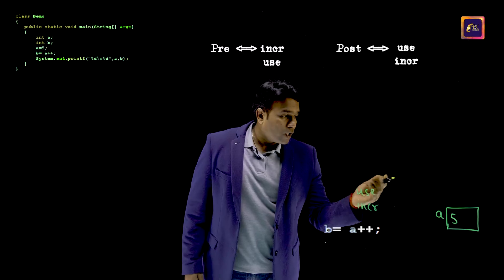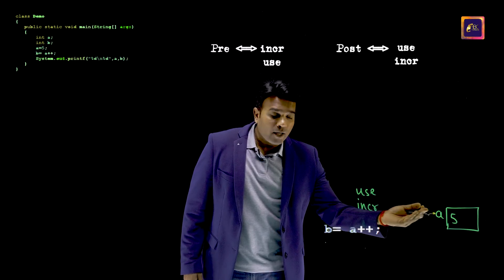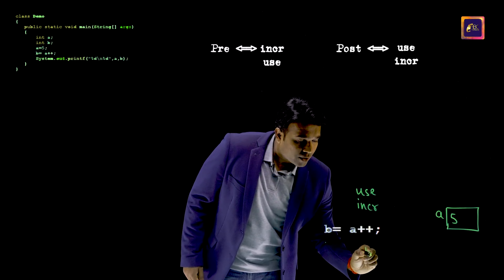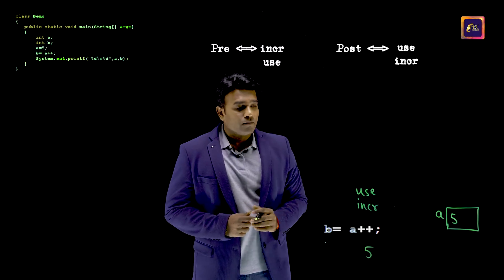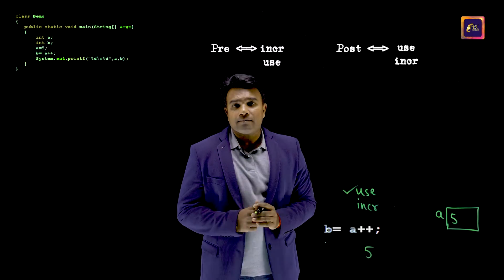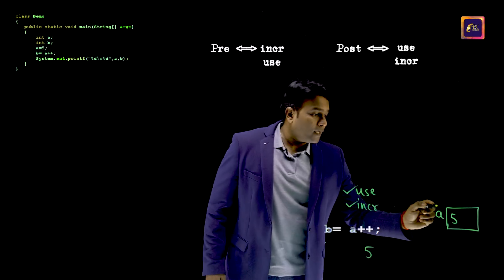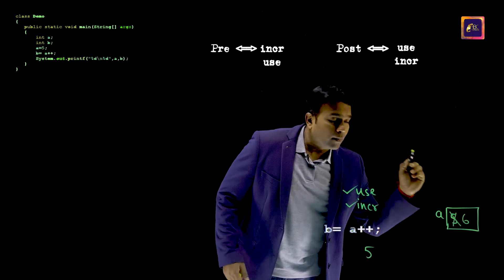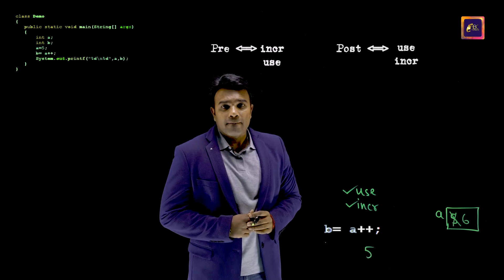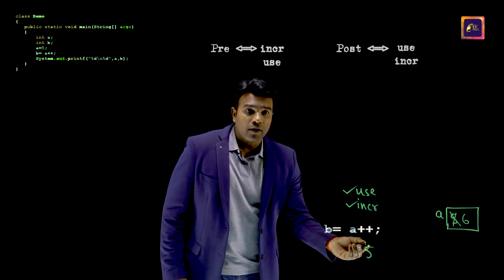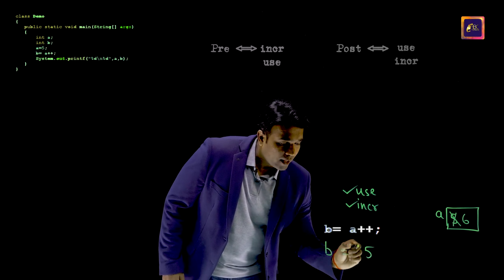I have to use. So whatever is the data available, I would be using it. So this job is done. Next, I have to increment. Obviously, I would be incrementing. And this 5, obviously, it's going to get into B this way.